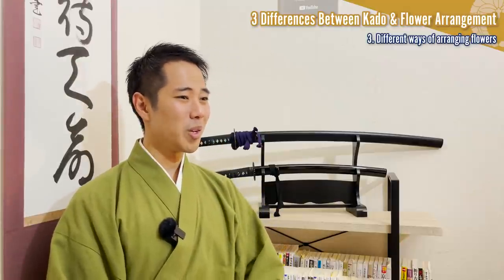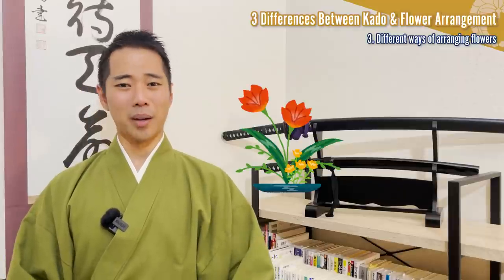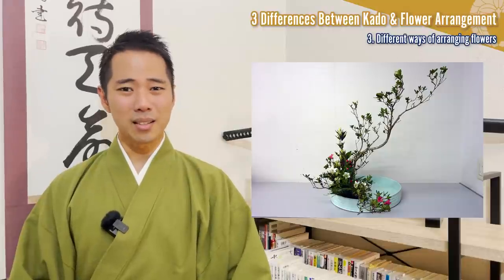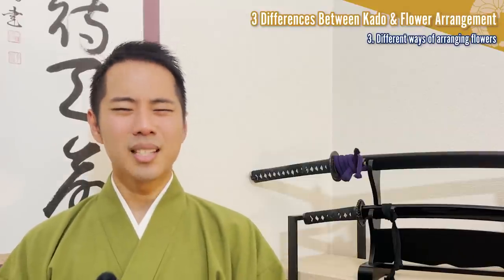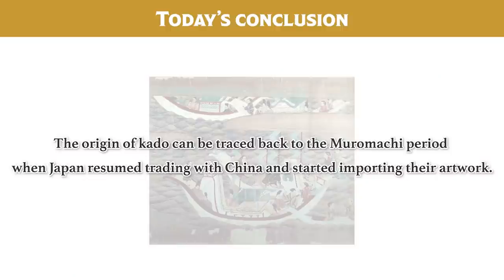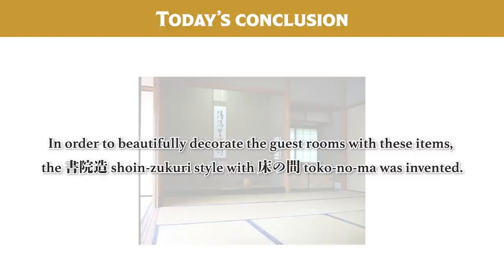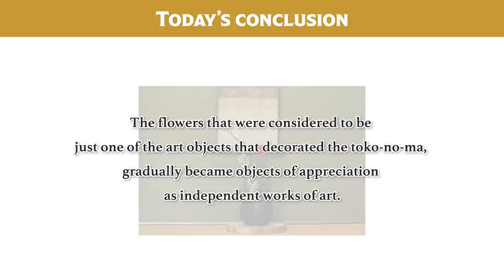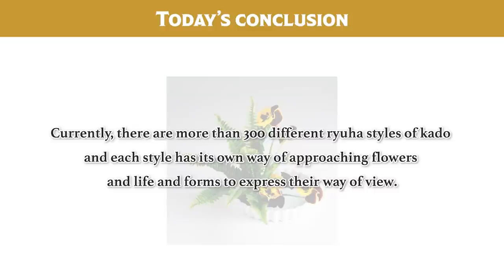By the way, what I've told you through this video is just a basic idea. Since both kado and flower arrangement are very artistic, and there are many different ryūha styles and points of view, please understand that what I've explained does not always apply to every work of art. The origin of kado can be traced back to the Muromachi period, when Japan resumed trading with China and started importing their artwork. In order to beautifully decorate guest rooms, the shōinzukuri style with tokonoma was invented. The flowers that were considered just one of the art objects that decorated the tokonoma gradually became objects of appreciation as independent works of art. Currently, there are more than 300 different ryūha styles of kado, each with its own way of approaching flowers and life.